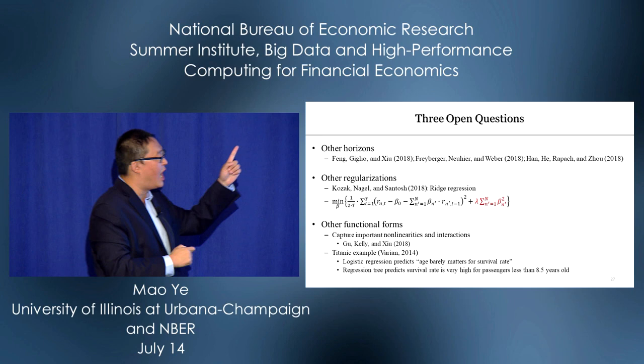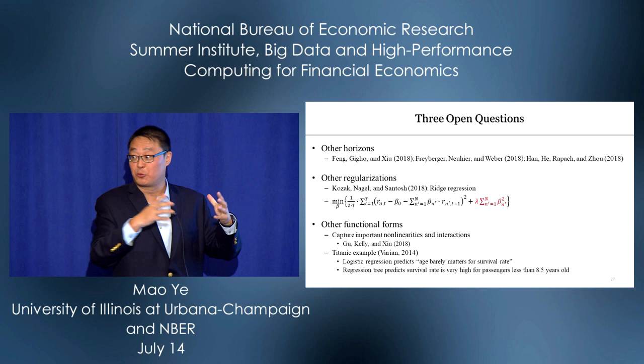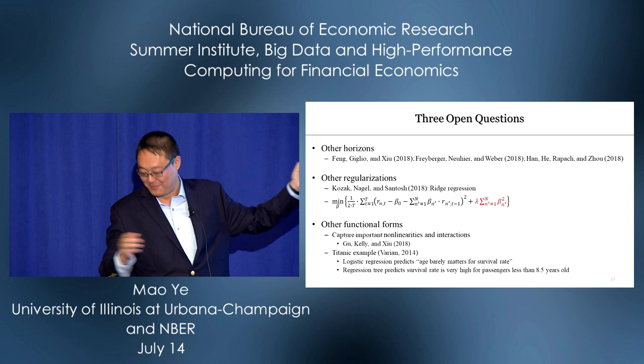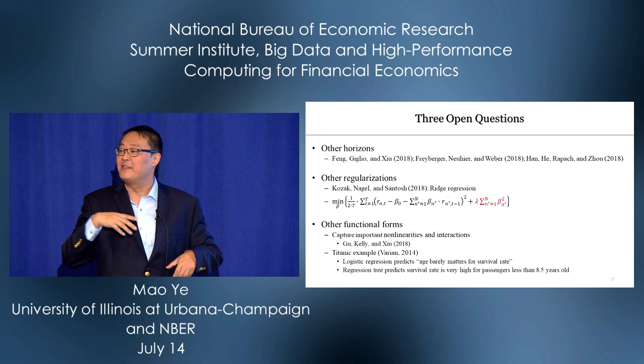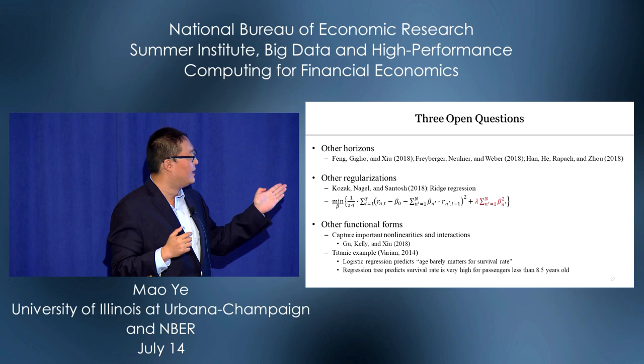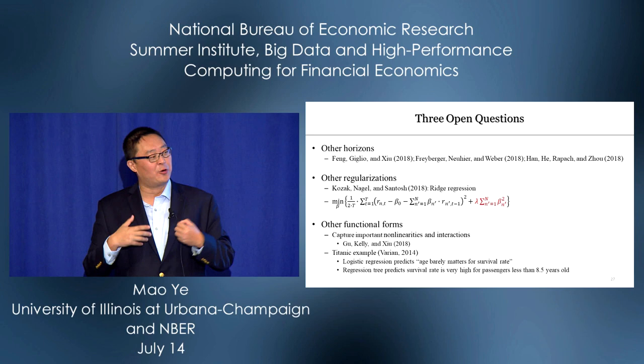The second dimension is other regularizations. Kozak, Nagel, and Santosh have a nice paper using ridge regression — linear functional form, but with an L2 penalty (the square of beta), compared to LASSO's L1 absolute value. The third dimension is other functional forms. Gu, Kelly, and Sho show that regression trees and neural networks can capture important nonlinearities and interactions.